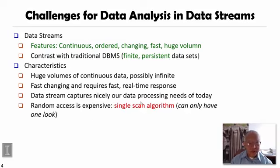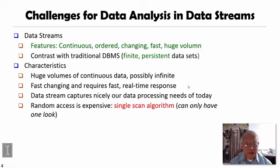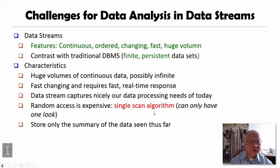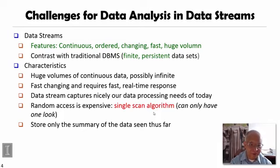In general, for processing data streams, random access is expensive because the data come and go — you don't want to fetch back, and you cannot fetch forward either. So these algorithms developed for data streams are called single-scan algorithms, meaning for any particular data page, you can only have one look. Another important thing is that for data streams, in many cases you may want to store some kind of sketch or summary of the data seen so far, instead of storing detailed data, because you don't have the volume capacity or processing power.